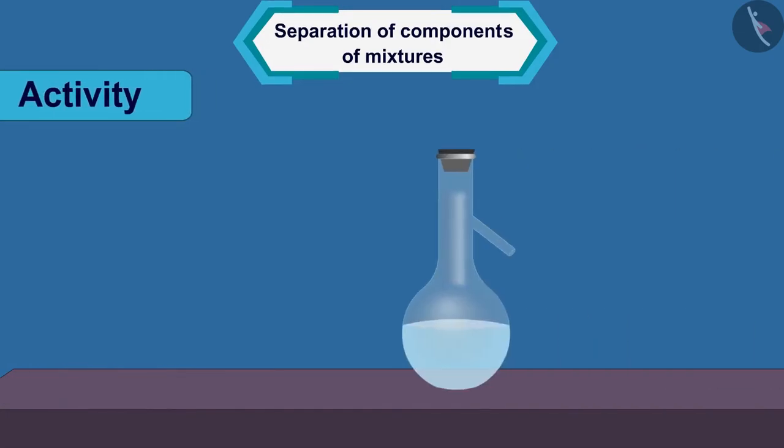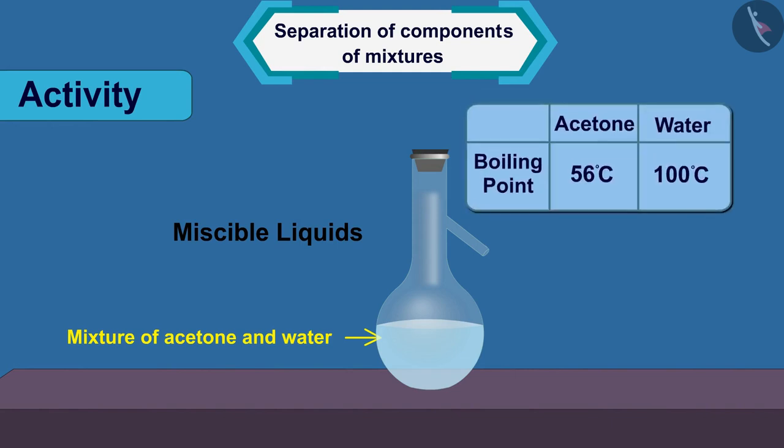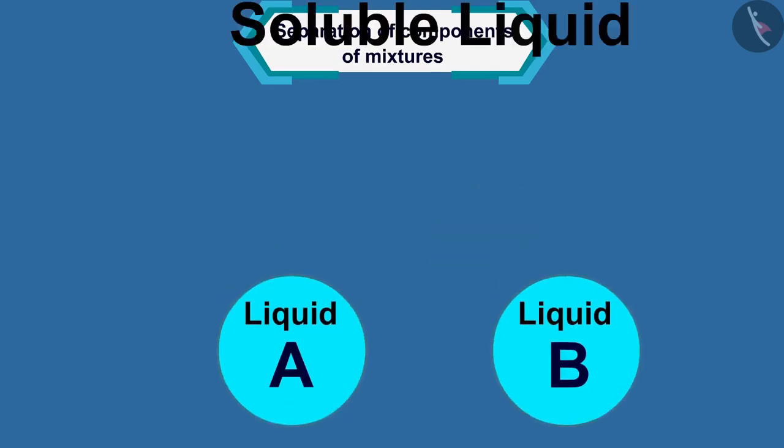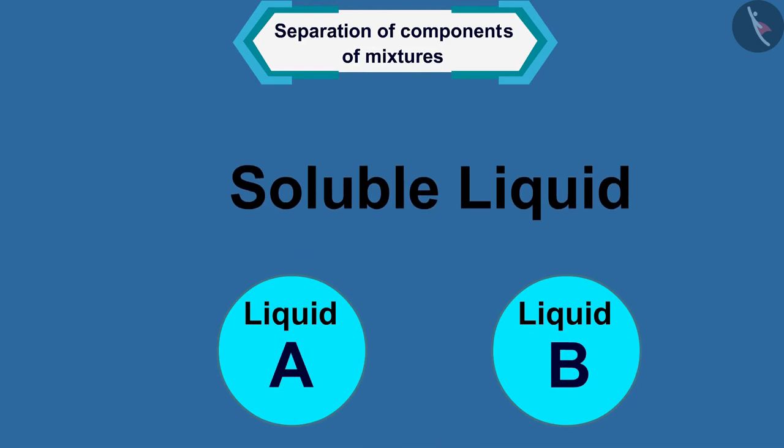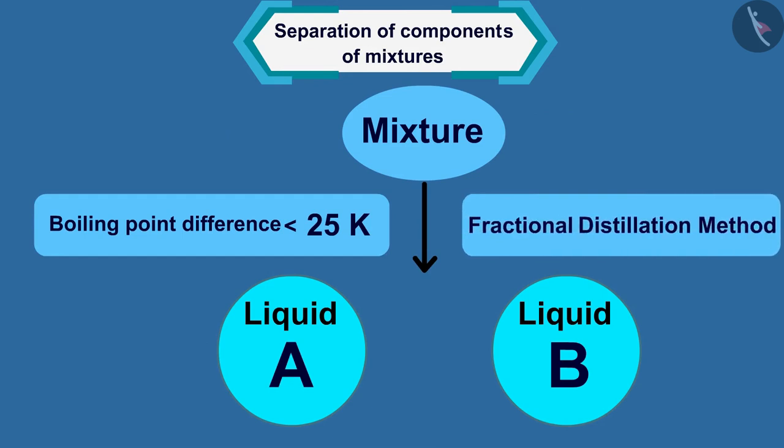This was possible because a mixture of acetone and water is a mixture of two miscible liquids that boiled without decomposition and have sufficient difference in their boiling points between 56 degrees Celsius and 100 degrees Celsius. To separate a mixture of two or more miscible liquids for which the difference in boiling points is less than 25K, fractional distillation process is used.